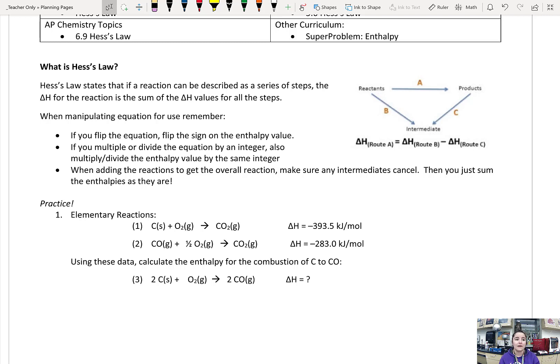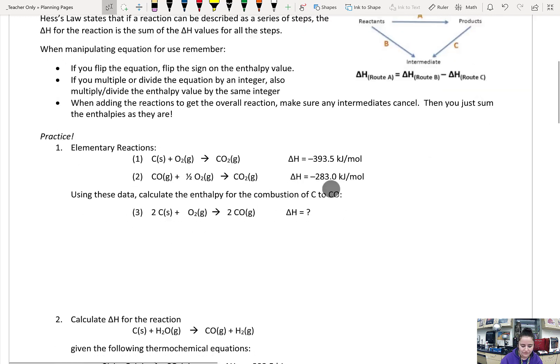Same thing with if we have to multiply an equation by an integer to get it to work out, then we should also multiply the delta H value by that same integer. And just make sure that all of our intermediates cancel, and if we're able to do that, then we can just sum up the steps just as they are. But this is going to be clear to see in an example. So, let's go for it.